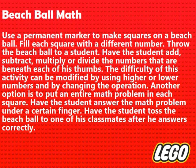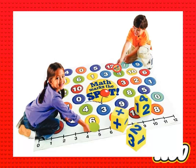The difficulty of this activity can be modified by using higher or lower numbers and by changing the operation. Another option is to put an entire math problem in each square. Have the student answer the math problem under a certain finger, then toss the beach ball to one of his classmates after he answers correctly.